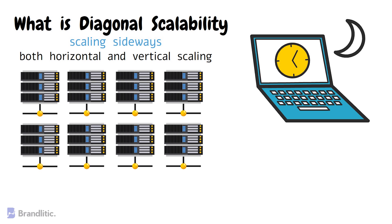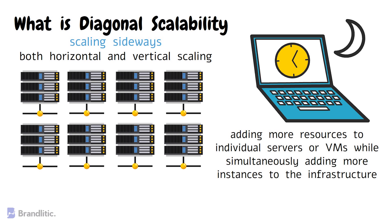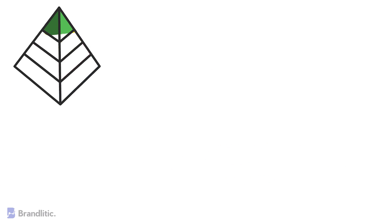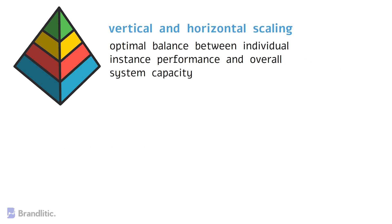In a nutshell, it involves adding more resources to individual servers or virtual machines while simultaneously adding more instances to the infrastructure. Because of this, it is able to leverage the benefits of both vertical and horizontal scaling, thereby providing an optimal balance between individual instance performance and overall system capacity.